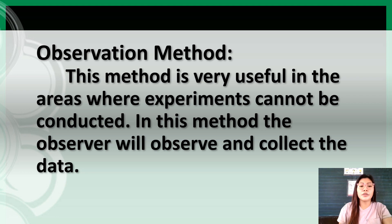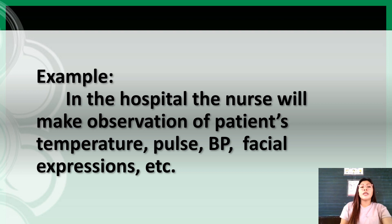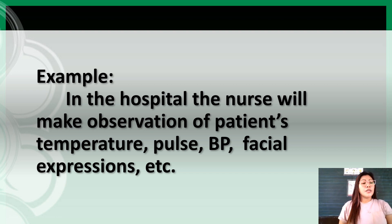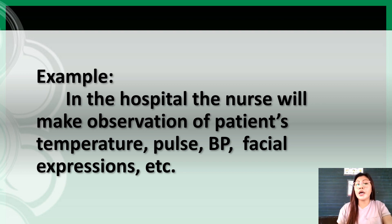Number two is the observation method. This method is very useful in areas where experiments cannot be conducted. In this method, the observer will observe and collect the data. For example, in the hospital, the nurse will make observation of patients' temperature, pulse, BP, facial expressions, etc. This method is very useful to study children, mentally ill, animals, and unconscious patients. At times, the observer will go to natural settings and situations in order to get the objective data.